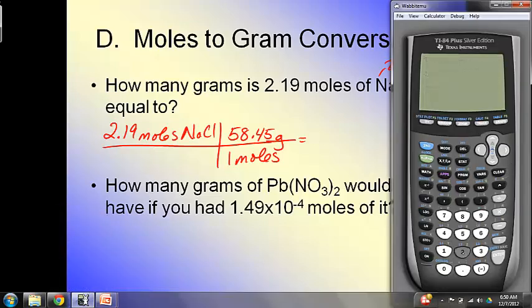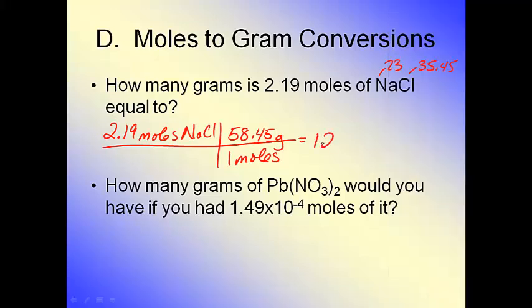So now I'm going to multiply through. Clear that out. I've got 2.19 times 58.45. And I've got 128.00 blah, blah, blah, blah, blah. But I only need three digits. So I'm going to round it to 128 grams of sodium chloride, which is a pretty decent amount of salt.